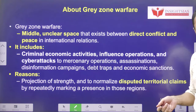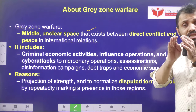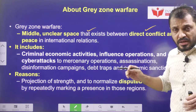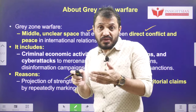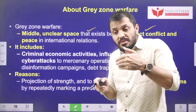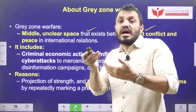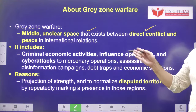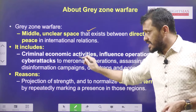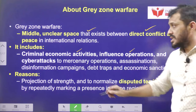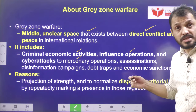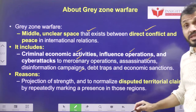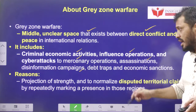Gray zone warfare is a middle, unclear space that is present between peace as well as indirect conflict. Through gray zone warfare, a country first tries to provoke the opponent, and the opponent, as self-defense, may start the war. Activities that fall under gray zone warfare include criminal economic activities, influence operations, cyber attacks, and mercenary operations. It can involve private agencies, assassinations of important personnel, and disinformation campaigns about the government and government policies.